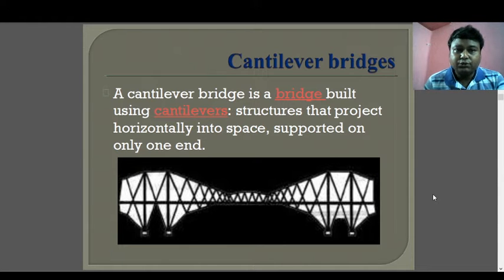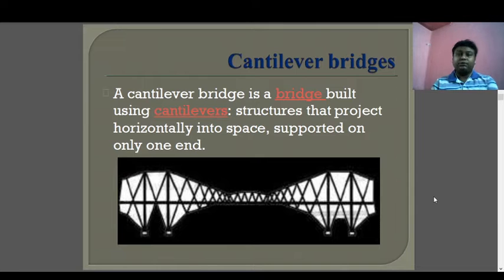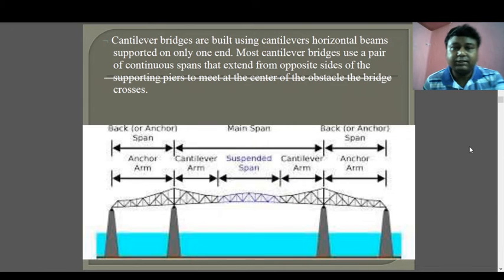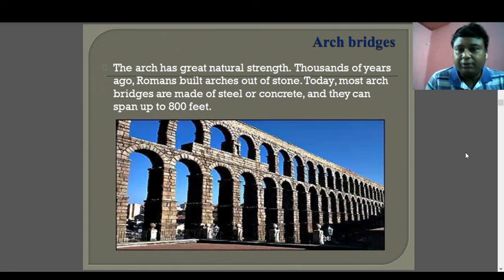A cantilever bridge is built using cantilever structures that project horizontally into space supported at only one end. As you know about cantilevers, one portion is supported and another portion is free. Different types of tension and compression come from this type of bridge. The arch bridge is a historical type of bridge rarely manufactured today. The arch has great natural strength; thousands of Roman bridges were built of stone arches. Now arch bridges are built of steel and concrete.